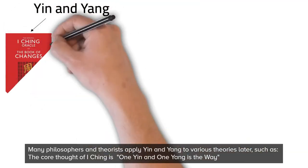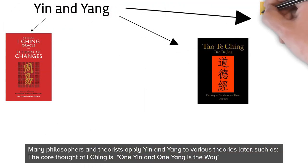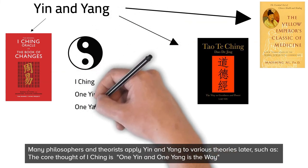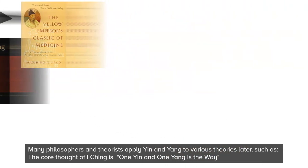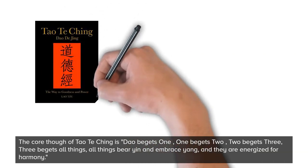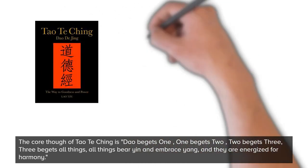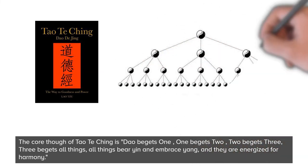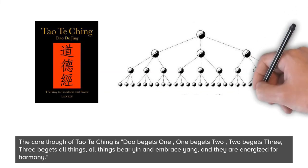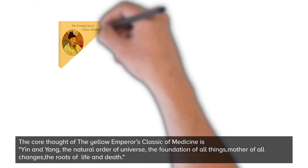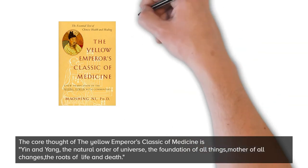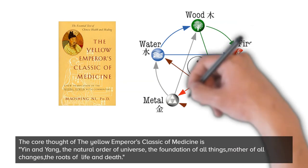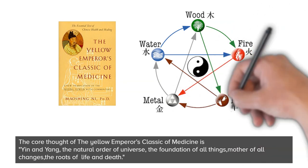Many philosophers and theorists applied yin and yang to various theories. The core thought of the I Ching is: one yin and one yang is the Way. The core thought of the Tao Te Ching is: Dao begets one, one begets two, two begets three, three begets all things — all things bear yin and embrace yang, and they are energized for harmony. The core thought of the Huangdi Neijing is: yin and yang are the natural order of the universe, the foundation of all things, the mother of all changes, and the roots of life and death.